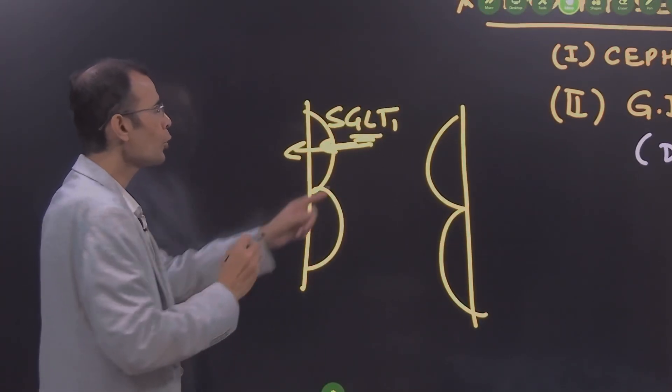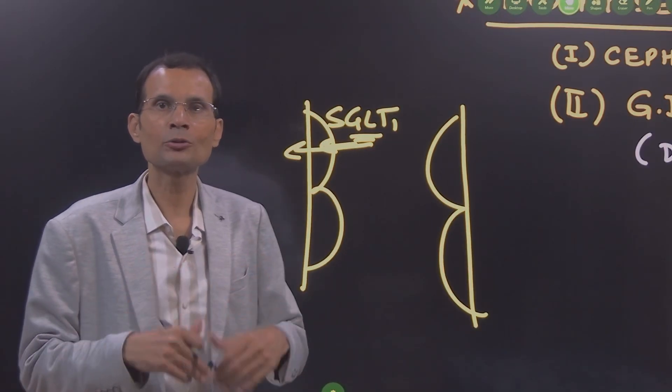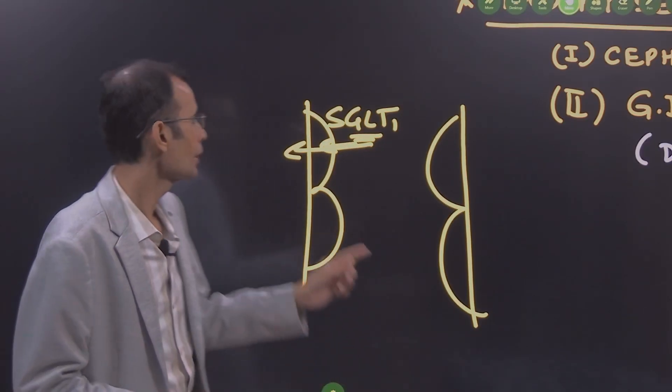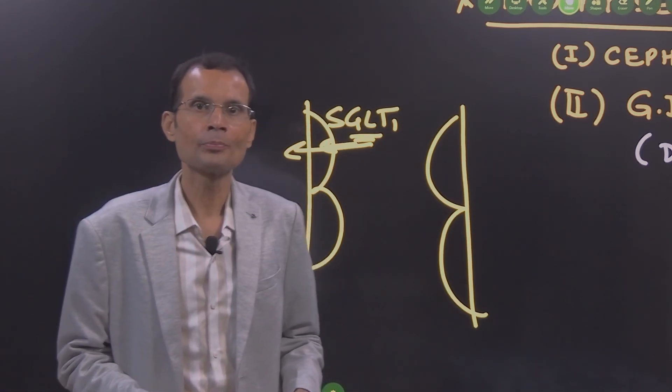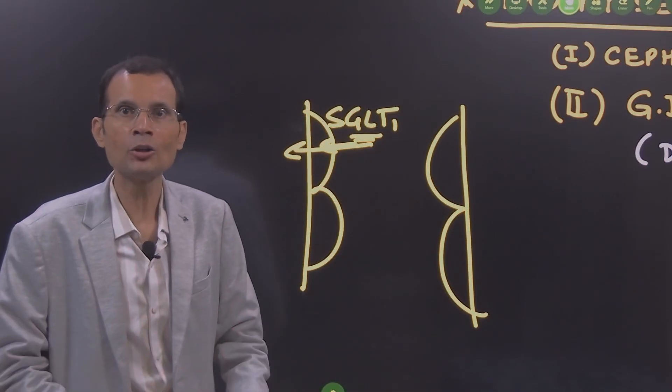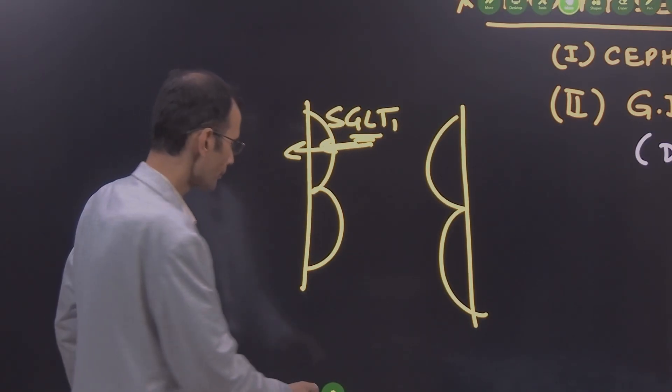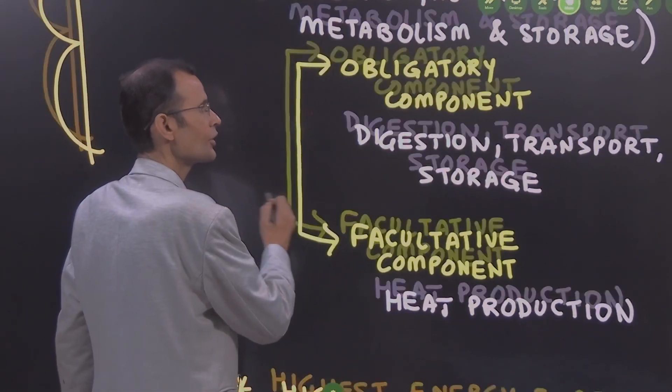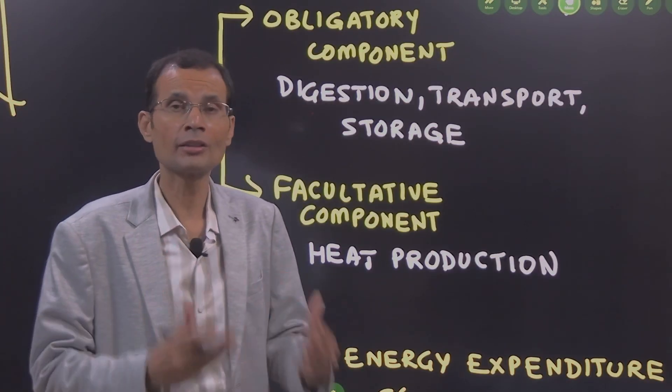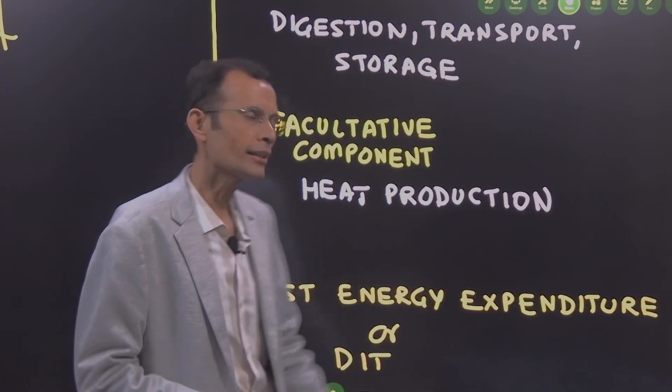I will just give you an example. Glucose absorption from the digestive tract. When we eat carbohydrates, they are first converted into simple forms like glucose and then glucose absorption requires the transporter SGLT. Now this SGLT is a secondary active transporter. It is based on the sodium potassium pump which requires ATPs. So ATPs will be broken down just for the transport of glucose from the lumen into the bloodstream. So similarly, digestion, transport and storage of the nutrients will require or will cause certain amount of ATP breakdown and then there is facultative component which will eventually generate heat as a byproduct.